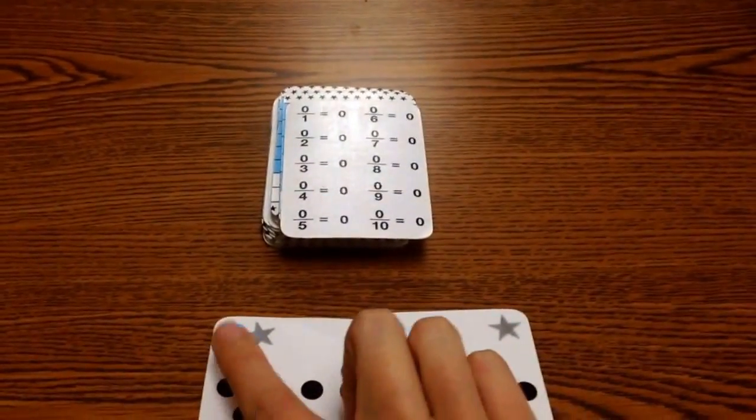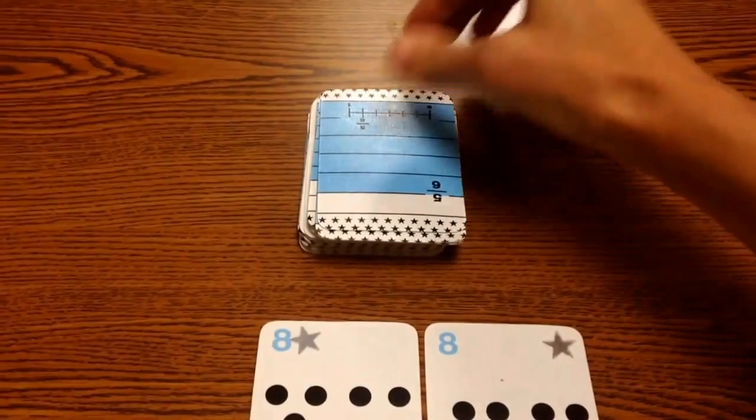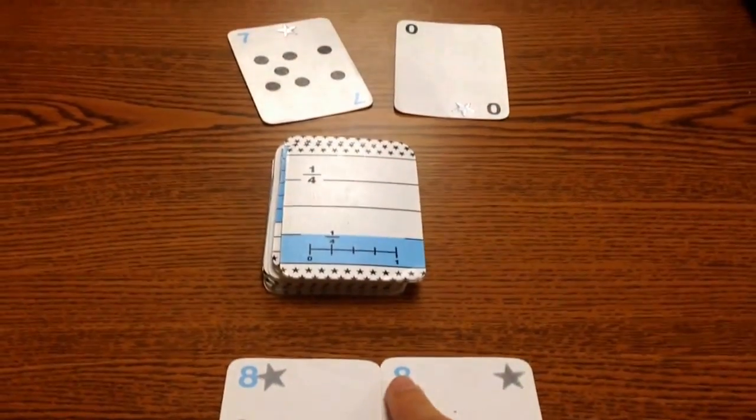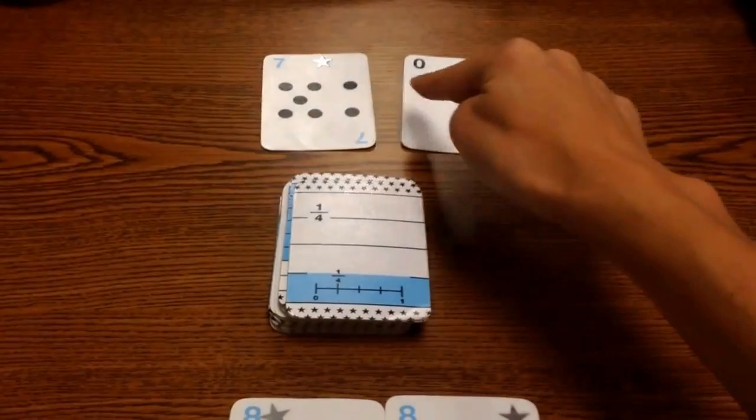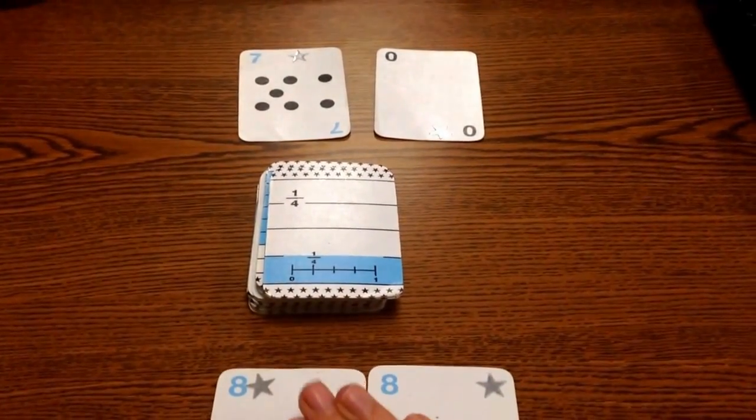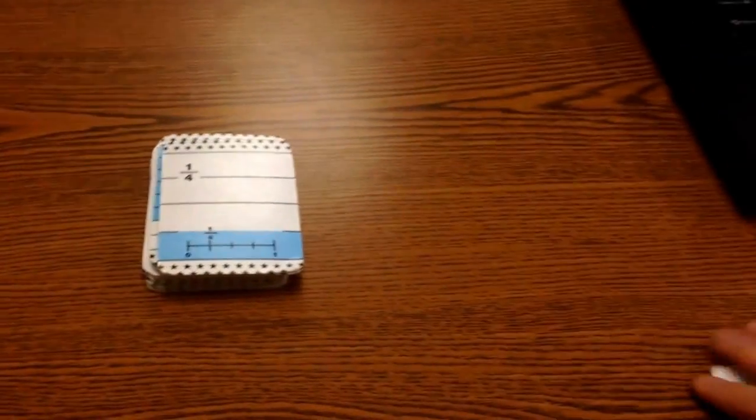Alright, so I have two single digit cards. 8 plus 8. My partner will also draw two cards. 8 plus 8 is 16. My partner got 7 plus 0, which is 7. Because mine adds up to more, I get to keep all four cards in my pile.